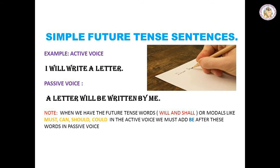Let us take a look at simple future tense sentences. I will write a letter — 'will' is a future tense word, so this is in active voice. When you convert this into passive voice, bring the object first: a letter will be written by me. When you have future tense words or modals like 'must', 'can', 'should', 'could', in the passive voice you must add 'be' after these modal words.